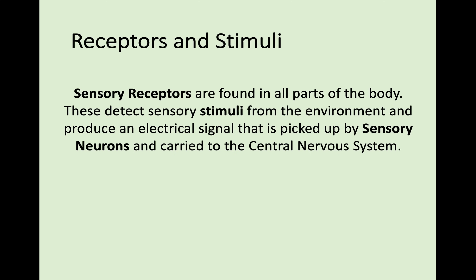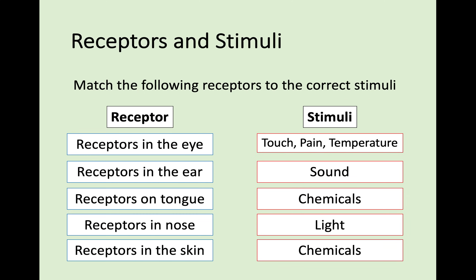Next we'll look at how information is relayed around the body. Sensory receptors are found in all parts of your body and they detect sensory stimuli from the environment to produce an electrical signal that's picked up by sensory neurons. That is then carried to the central nervous system and the response is going to be made from that. I've got a list of receptors on the left-hand side of the screen and a list of different stimuli on the right-hand side of the screen.